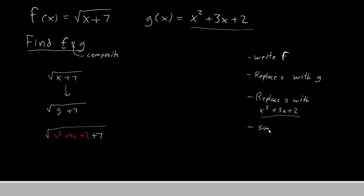After this, you can simplify if possible. Just combine the like terms. So our final answer would be x squared plus 3x plus 9.